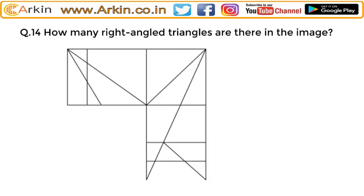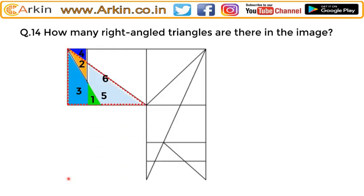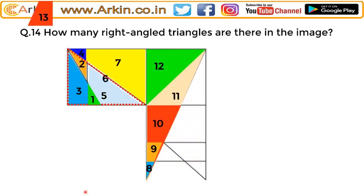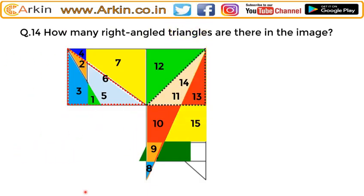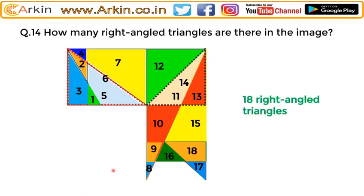How many right angle triangles are there in this image? You have to count not just any triangle, but specifically right angle triangles. Let's start counting: one, two, three, four, five, six, seven, eight, nine, ten, eleven, twelve, thirteen, fourteen, fifteen, sixteen, seventeen, eighteen. There are a total of eighteen right angle triangles.